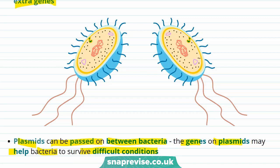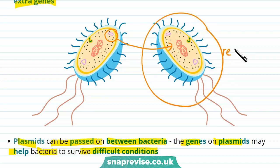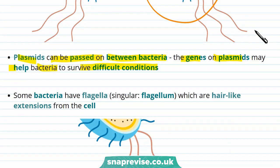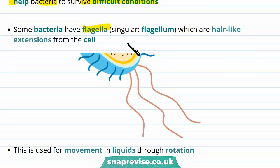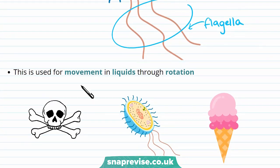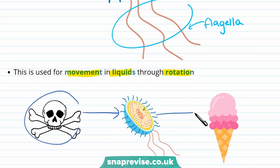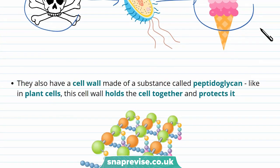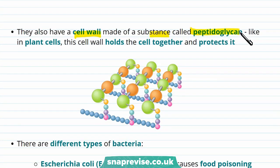The genes on plasmids may help bacteria to survive difficult conditions. For example, if bacteria are exposed to antibiotics which normally kill bacteria, if a plasmid has something that allows it to be resistant to the antibiotic, this resistance can be passed on to other bacteria, meaning they wouldn't be killed. Some bacteria also have flagella — the singular is flagellum. These are hair-like extensions from the cell used for movement in liquids through rotation, allowing bacteria to move away from toxic or harmful substances and towards substances such as food. Bacteria also have a cell wall made up of a substance called peptidoglycan, which holds the cell together and protects it.